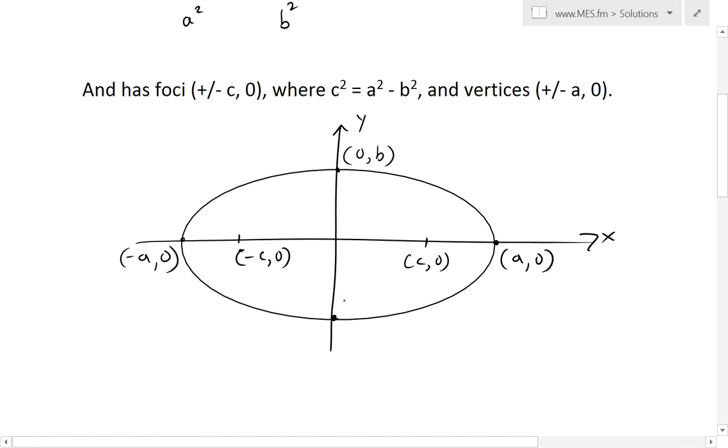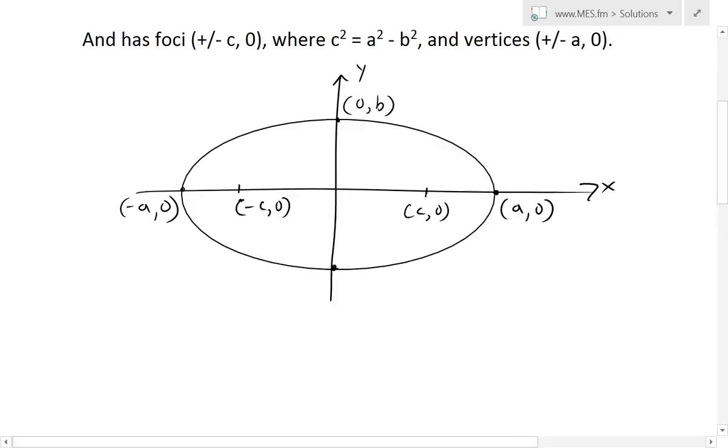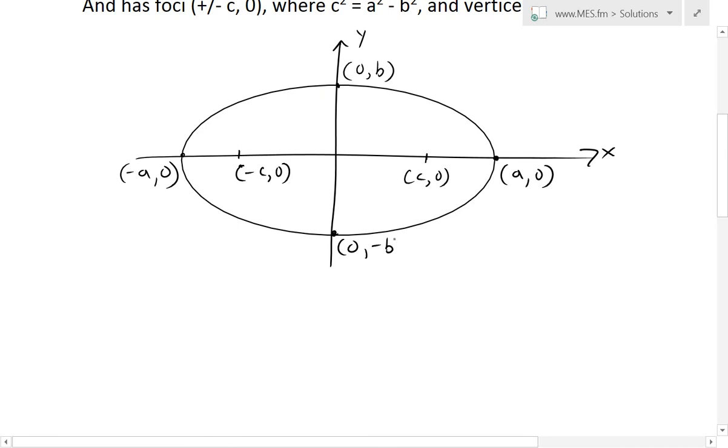And at this point, at this vertical or these y intercepts, then here is going to be negative b over there.